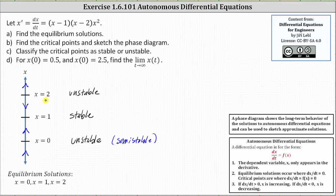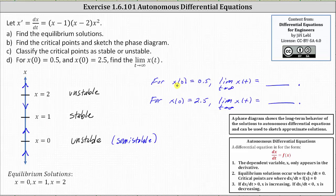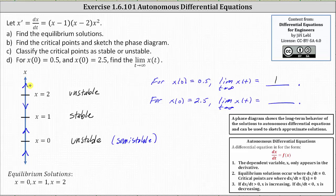And finally for Part D, we're asked to find the limit as t approaches infinity of x of t when x of zero equals 0.5 and x of zero equals 2.5. For x of zero equals 0.5, the x value is between zero and one. Looking at the phase diagram, as t approaches infinity, x of t is going to increase and approach the equilibrium solution x equals one, so the limit as t approaches infinity of x of t is equal to one. For x of zero equals 2.5, the x value is greater than two. From the phase diagram, as t approaches infinity, x of t is going to increase without bound because there's no equilibrium solution above x equals two, and therefore the limit is equal to positive infinity, meaning the limit does not exist.